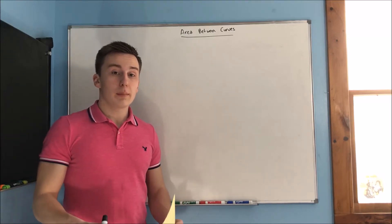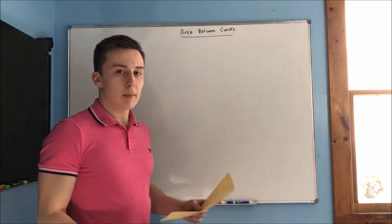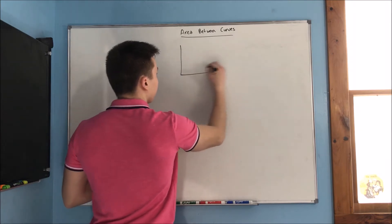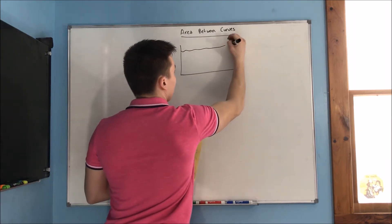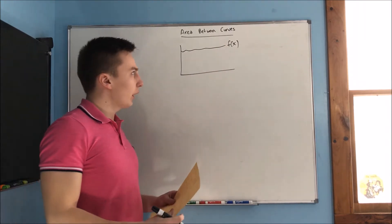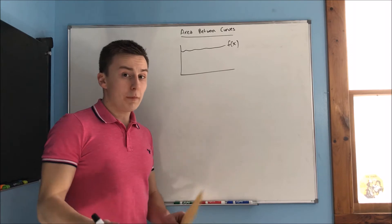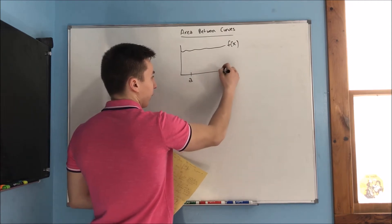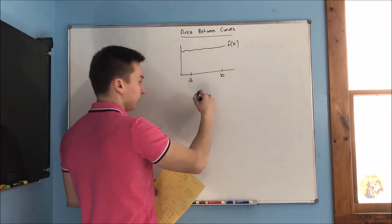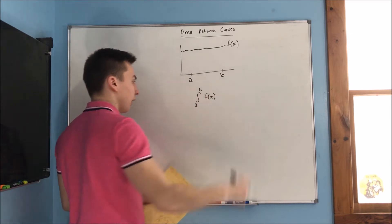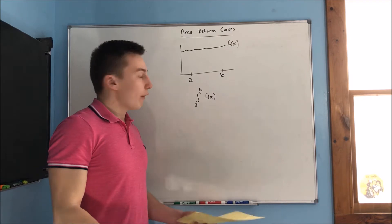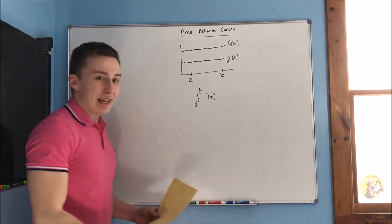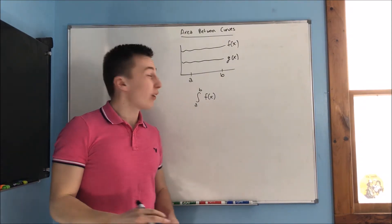In this video, we're going to be going over area between curves. So, what am I talking about here, and how do we find that? Say we have your function f of x, whatever that is. How would you find the area under the curve? Well, hopefully you know that you would take an integral from a to b of f of x. Now, what if I add another function g of x, and I ask you to find the area between f of x and g of x on that closed interval a to b?